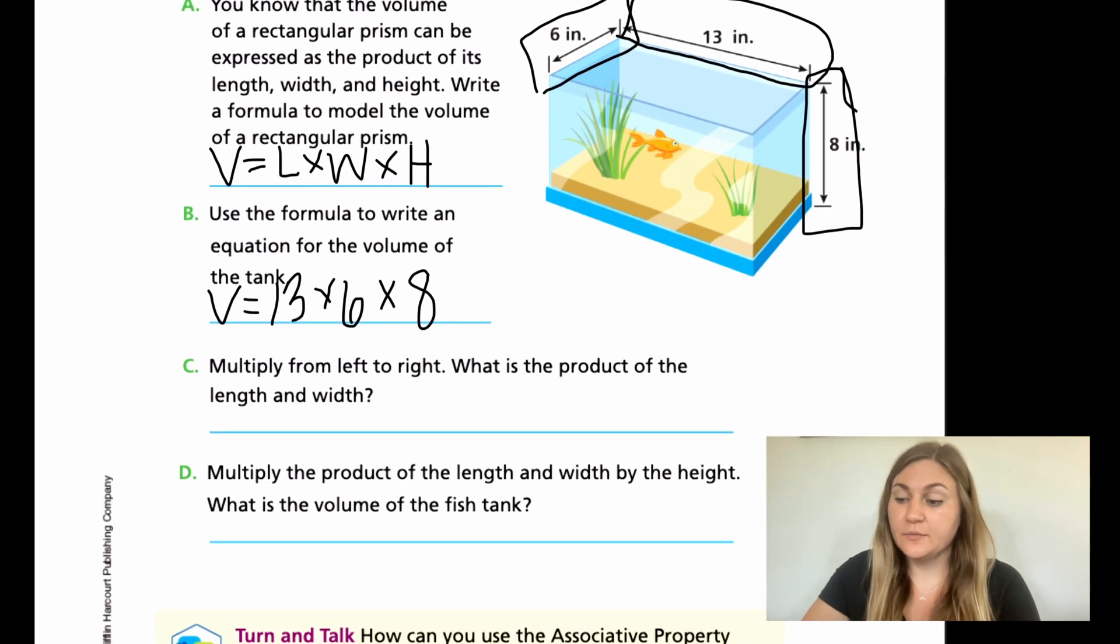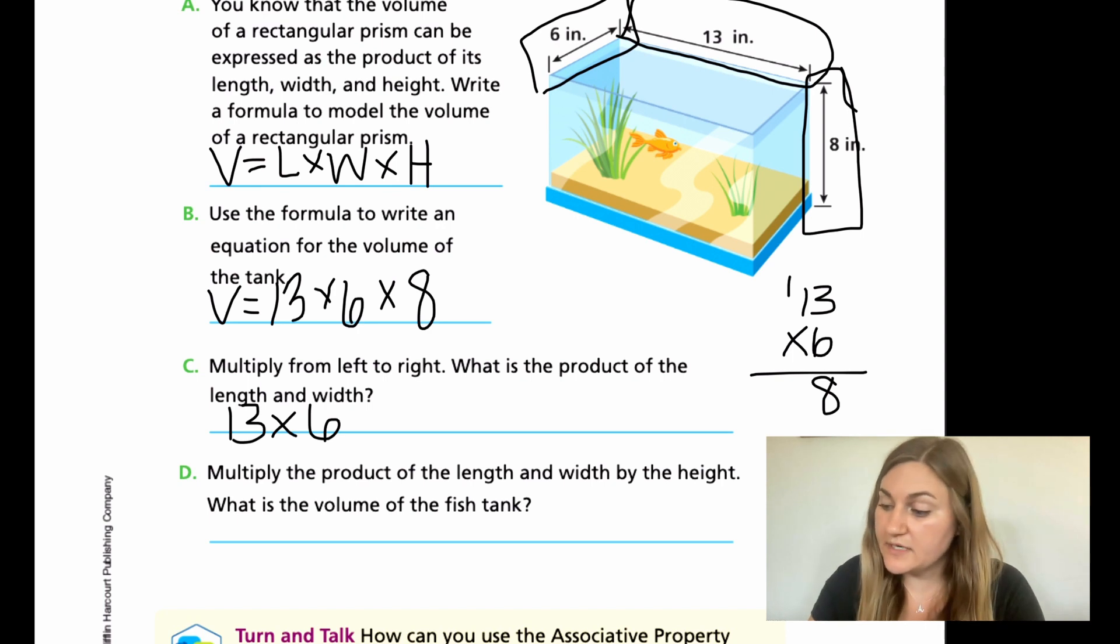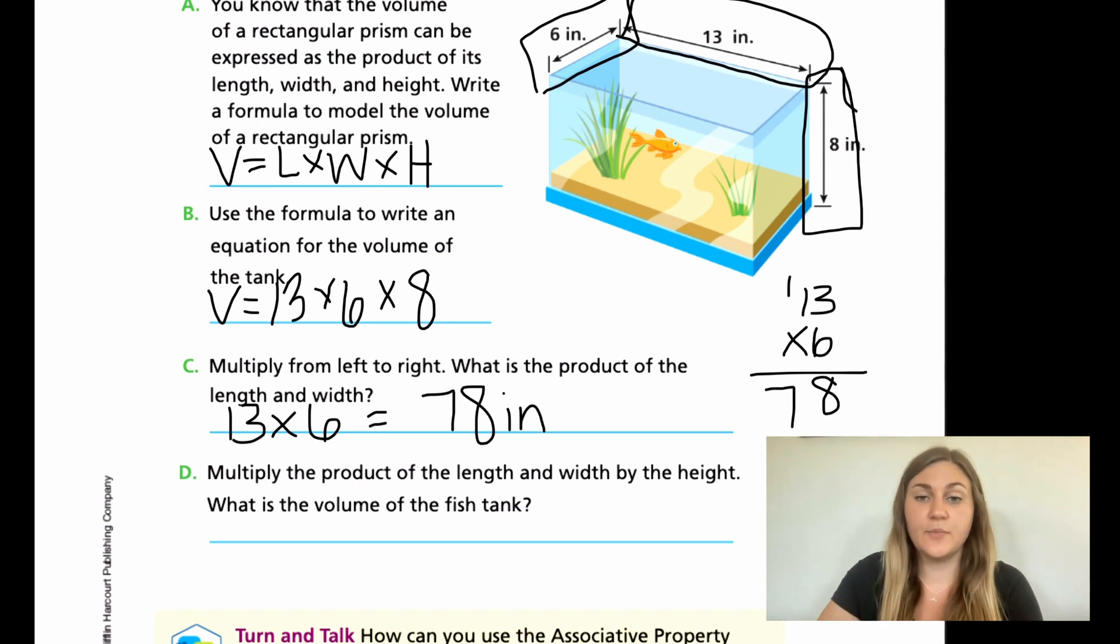For C, multiply from left to right. What is the product of just the length and the width? So right now we're just looking at 13 times 6. So 13 times 6, 6 times 3 is 18, carry the 1. 6 times 1 is 6, plus one more is 7. So I know that it is going to be 78, and the units it's using is inches. And remember, we just found the area or the base. We only found two pieces of the puzzle, which means it is squared, because there's only two dimensions being found.